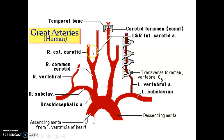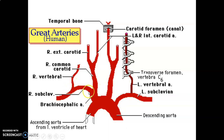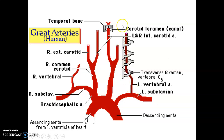Remember, the right common carotid comes from the brachiocephalic trunk. The arch of the aorta gives the brachiocephalic trunk that divides into right subclavian and right common carotid. But the left common carotid and left subclavian come directly from the brachiocephalic trunk. It is from the first part of the subclavian that you get your vertebral artery.